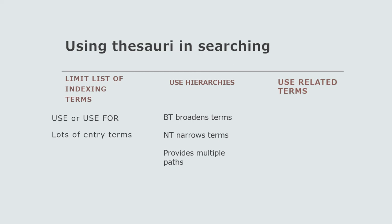In Rule 3, we can use RT, or related terms, to associate objects and the disciplines in which they're studied, processes and products, and tools and processes. For example, using RT, we can draw a relationship between cultures and sociology, or knitting and yarn.